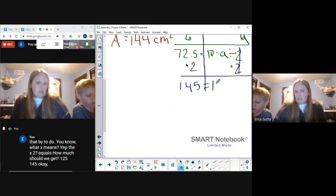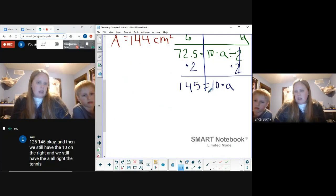Okay, and then we still have the 10 on the right and we still have the a. All right, the 10 is being multiplied by the a, so to finish our t-chart we're going to divide by 10.